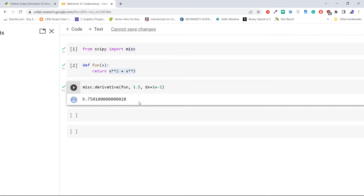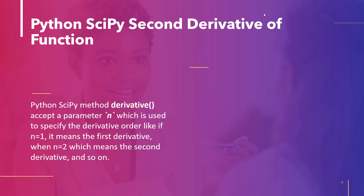This is how to find the derivative of a function using the `derivative` method of Python SciPy. The next topic is the Python SciPy second derivative of a function. The second derivative roughly speaking measures how a quantity's rate of change is itself changing. For example, the second derivative of an object's position with respect to time is the object's instantaneous acceleration — the rate at which the object's velocity is changing.